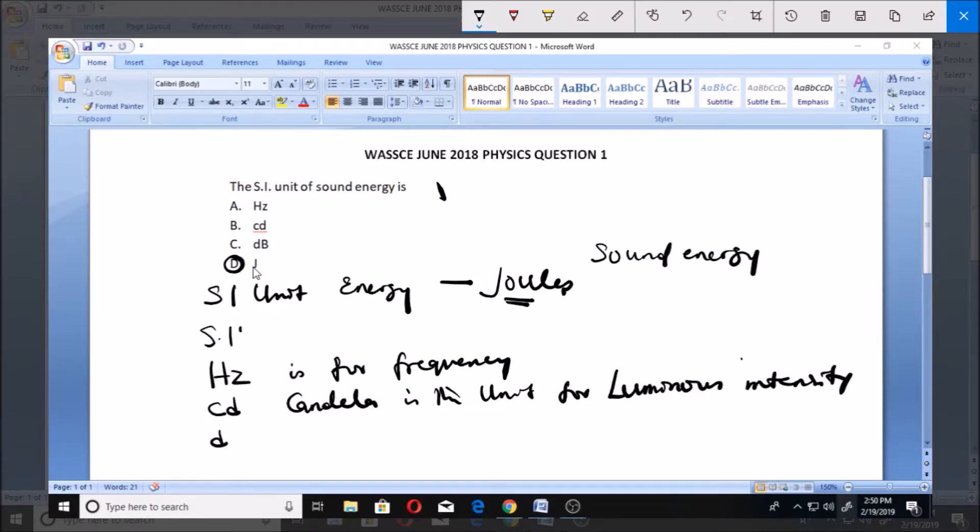Now DB, also called decibel, is the unit for relative loudness of sound. That's what it is for. So some people might want to pick decibels, but it's not actually decibel because decibel is the unit for relative loudness of sound.